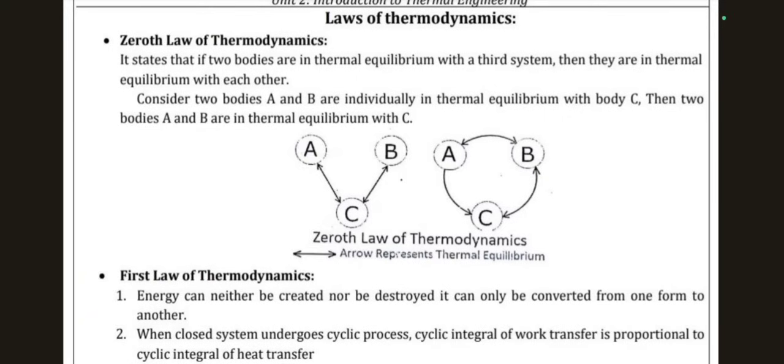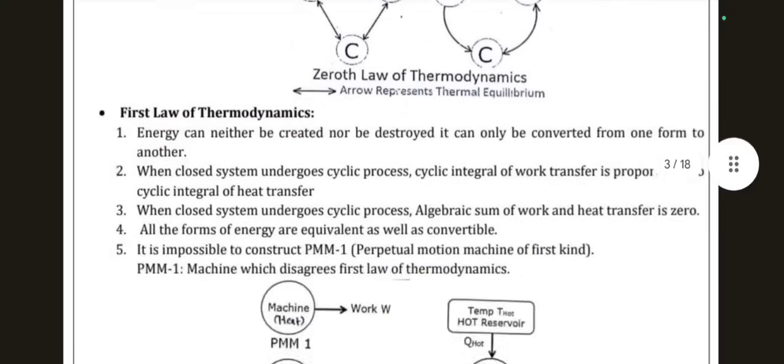Consider two bodies A and B individually in thermal equilibrium with body C. Then bodies A and B are in thermal equilibrium with each other. The diagram can clarify your concept of the 0th law of thermodynamics.